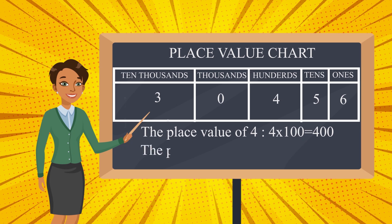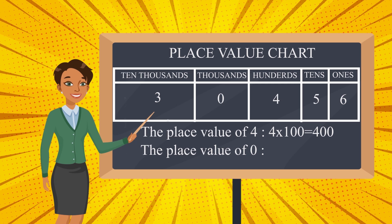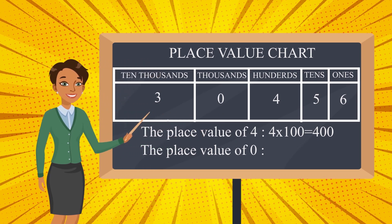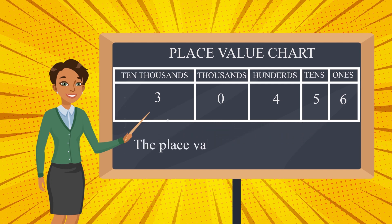Similarly, the place value of zero. We have zero in the thousands place, which means zero thousands — that is nothing. No thousands actually. So wherever zero may be placed, its value will be zero, because zero times any number is zero. The place value of three — three is in the ten thousands place, so three ten thousands is thirty thousand.